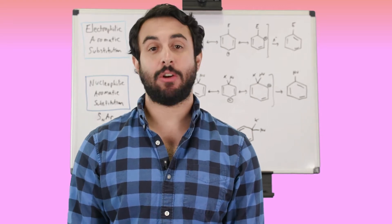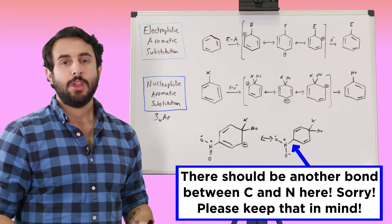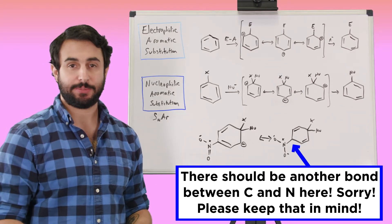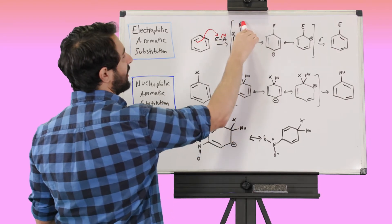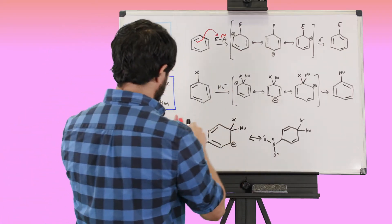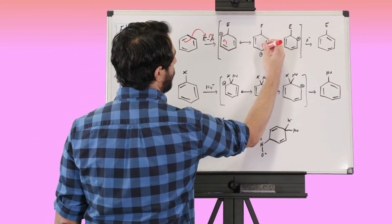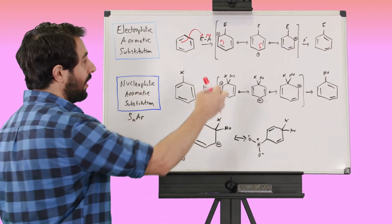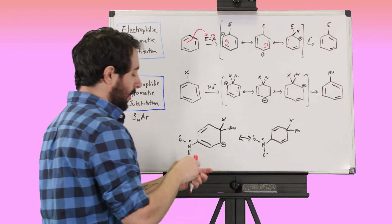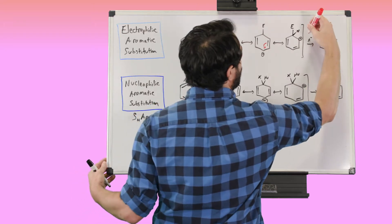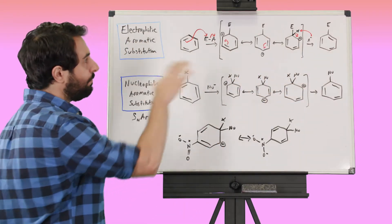Hey, it's Professor Dave. Let's talk about nucleophilic aromatic substitution. To quickly review electrophilic aromatic substitution: benzene reacts with an electrophile, generating a carbocation intermediate with several resonance structures. The creation of that arenium ion intermediate is the slow step, and then the fast step is when a base grabs a proton to restore aromaticity.